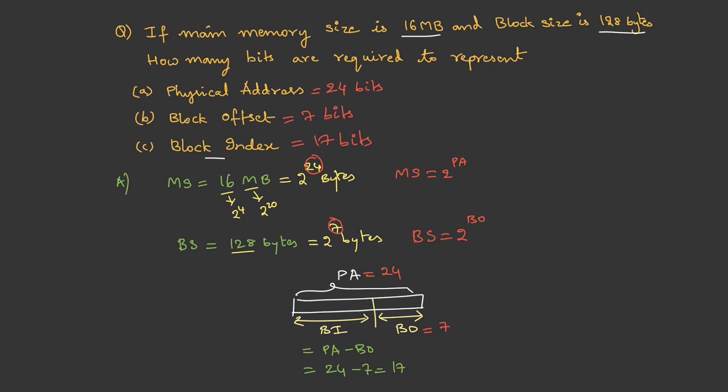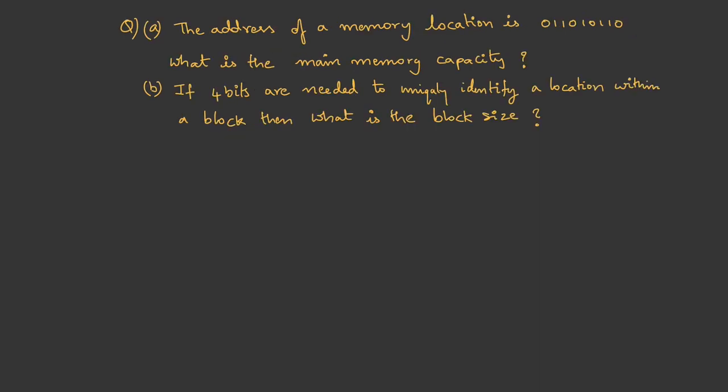Okay, let's try one more question. The address of a memory location is 01101 0110. What is the main memory capacity? Second part: If 4 bits are needed to uniquely identify a location within a block, then what is the block size?